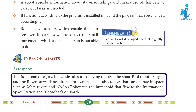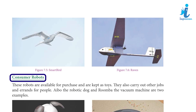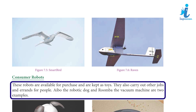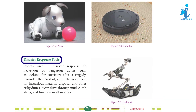Types of Robots — Aerospace: This is a broad category. It includes all sorts of flying robots, such as the Smart Bird robotic seagull and the Raven surveillance drone, as well as robots that can operate in space, such as Mars Rovers and NASA's Robonaut, the humanoid that flew to the International Space Station and is now back on Earth. Consumer Robots: These robots are available for purchase and are kept as toys or carry out other jobs. Aibo the robotic dog and Roomba the vacuum machine are two examples.